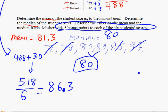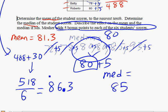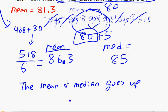Let's see what happens to the median. If you add five points to all the scores, the middle number still sits in the same position, but instead of 80 it's now 80 plus 5, so the median is going to be 85. And the mean is going to be 86.3. Our conclusion is that both the mean and the median go up by five points.